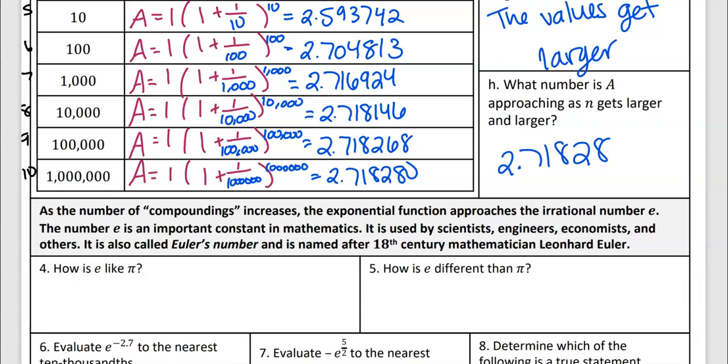This is the formula that naturally occurs to create the number e. As the number of compoundings increase, the exponential function approaches the irrational number e. The number e is an important concept in mathematics. It's used by scientists, engineers, economists, and others. It is also called Euler's number, and it's named after the 18th century mathematician Leonard Euler. So he's the one that discovered this.